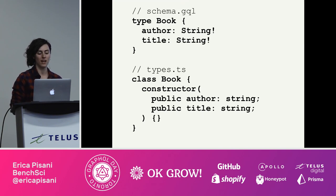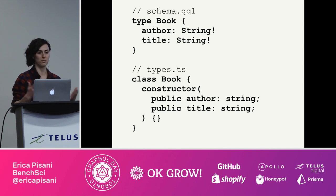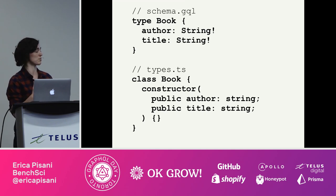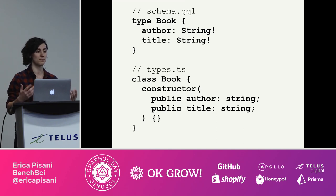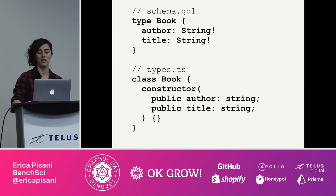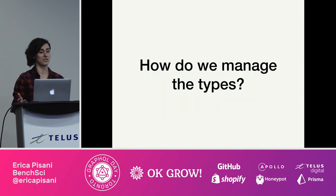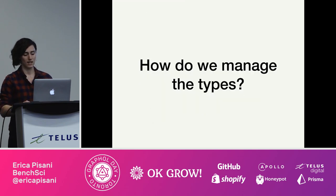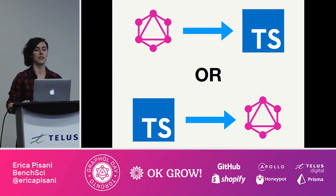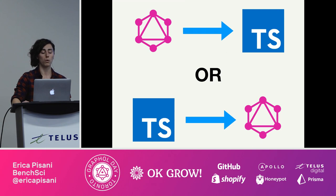You can imagine as your code base gets bigger, your code base gets really huge really fast, mainly due to this seeming redundancy in types. So that brings us to the question: how do we manage that? There are two approaches. We can either use GraphQL schemas as the source of truth to generate TypeScript, or we could use TypeScript classes as the source of truth and generate our GraphQL schema.